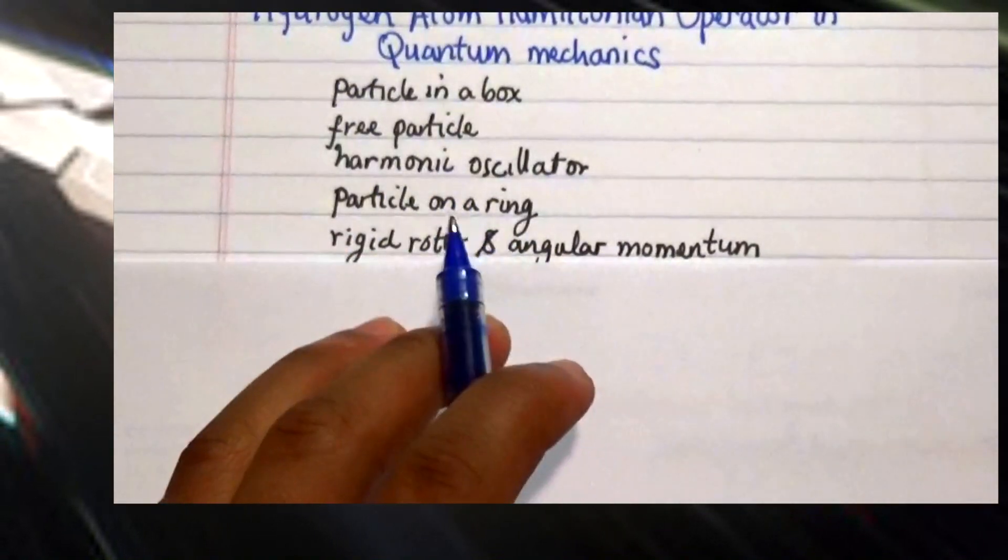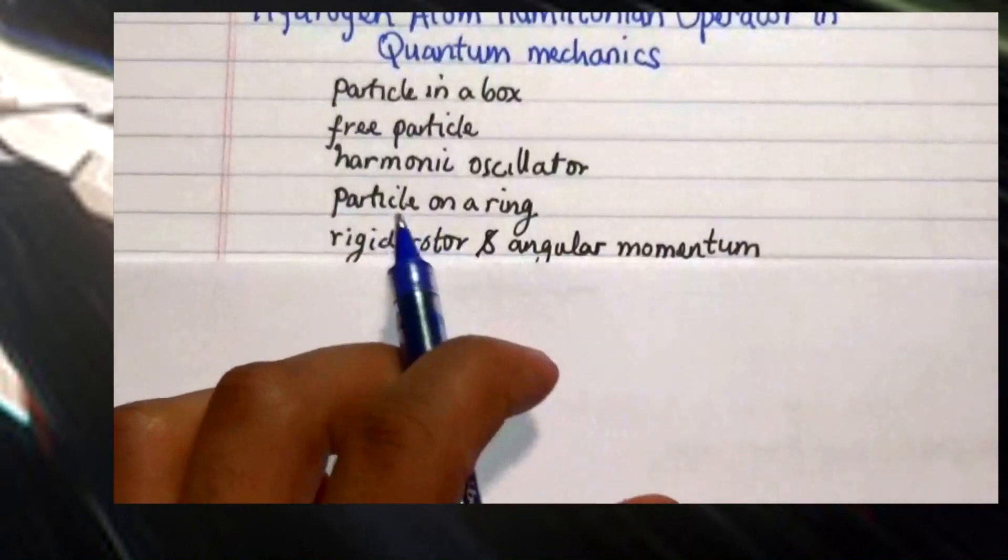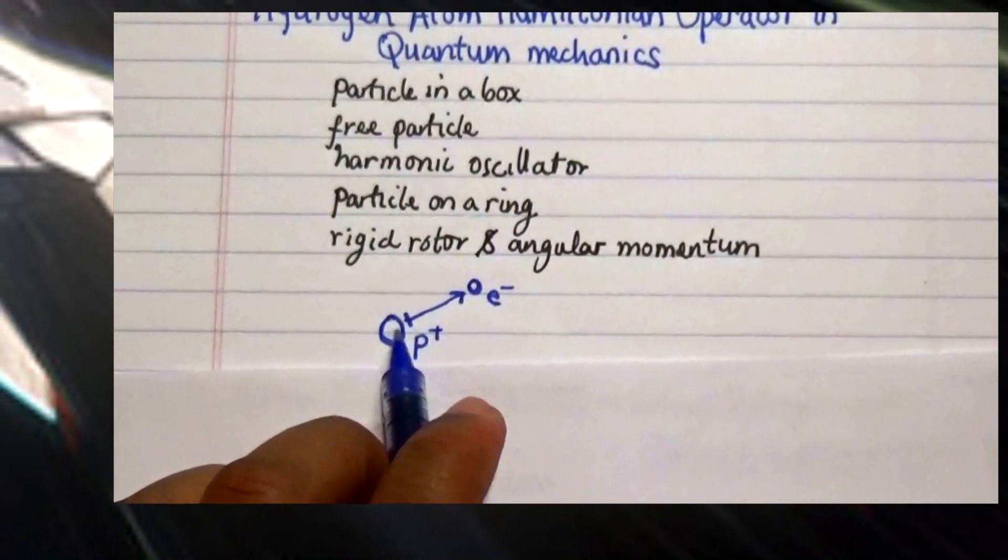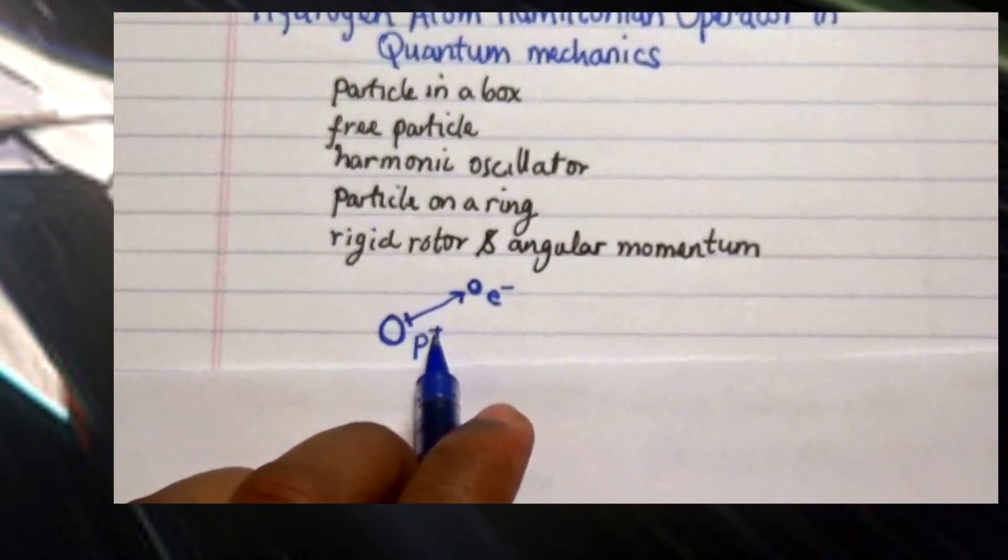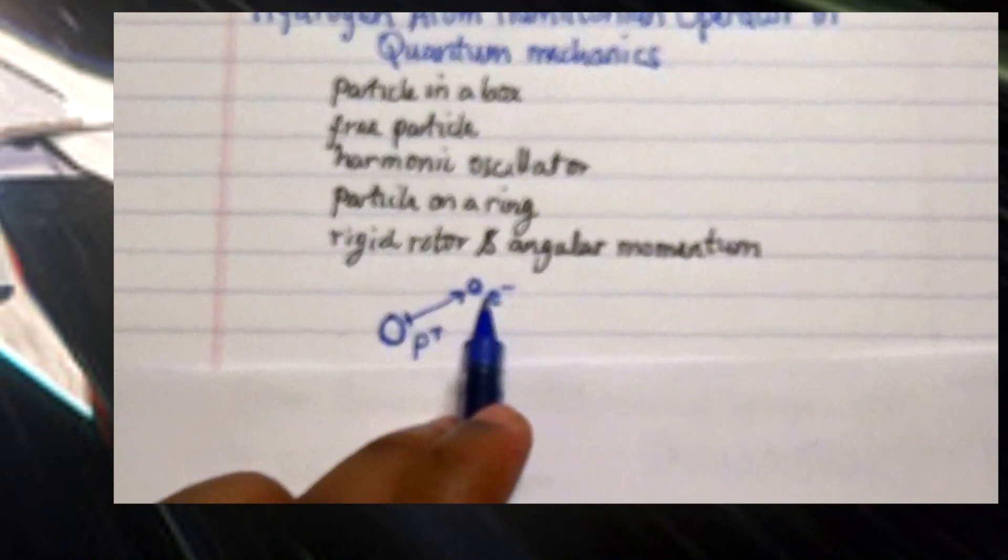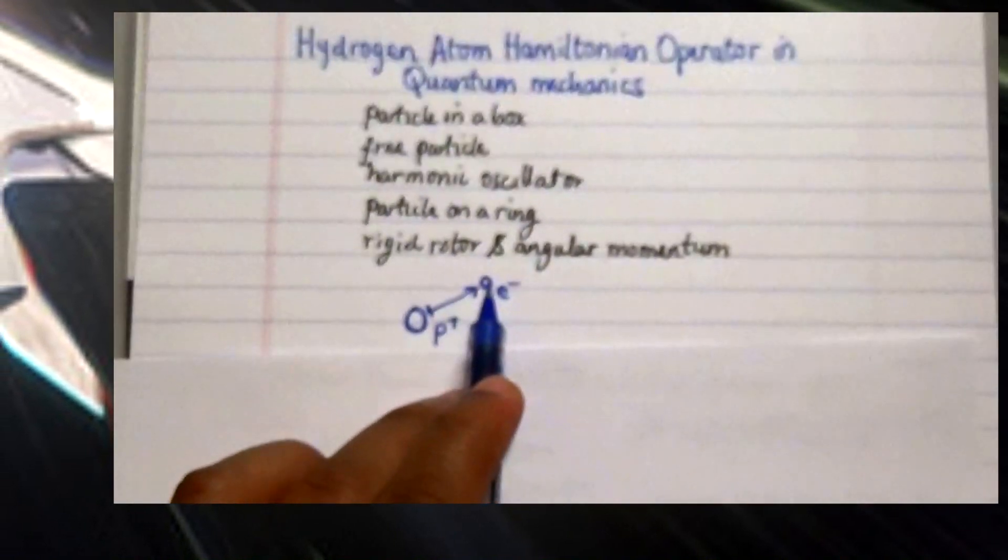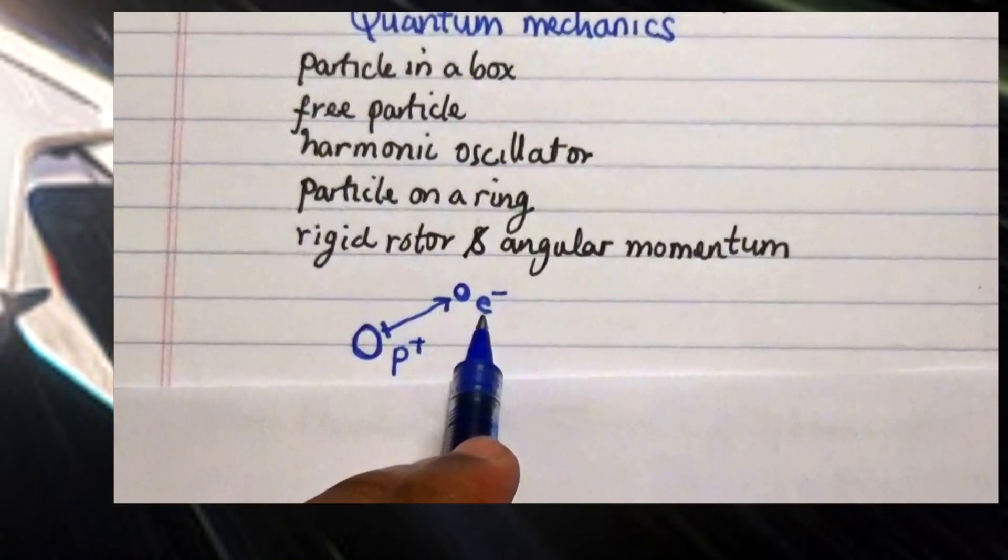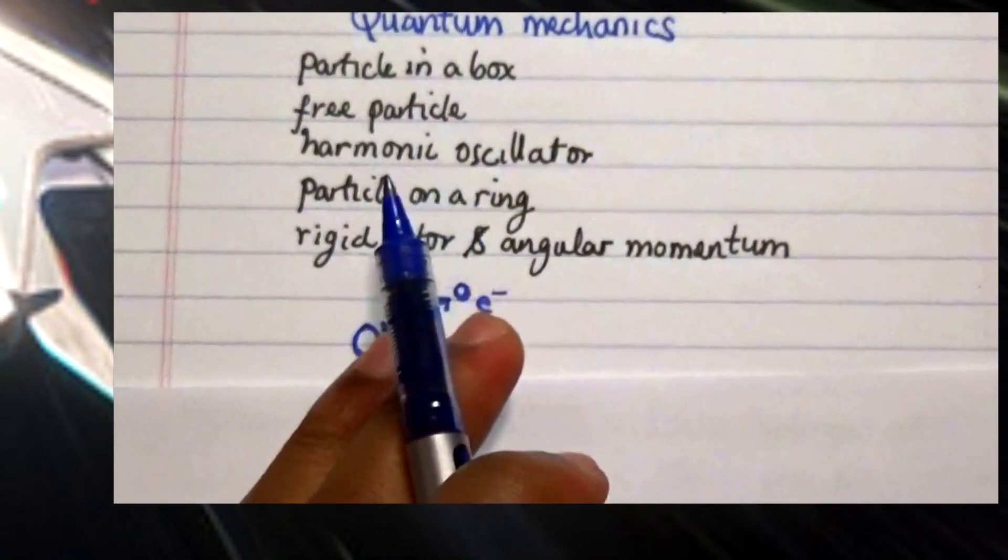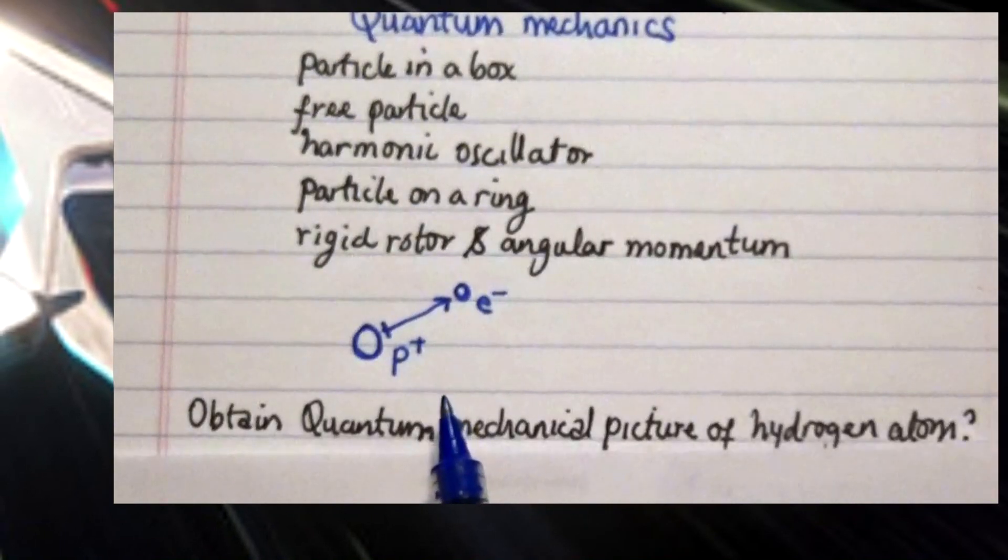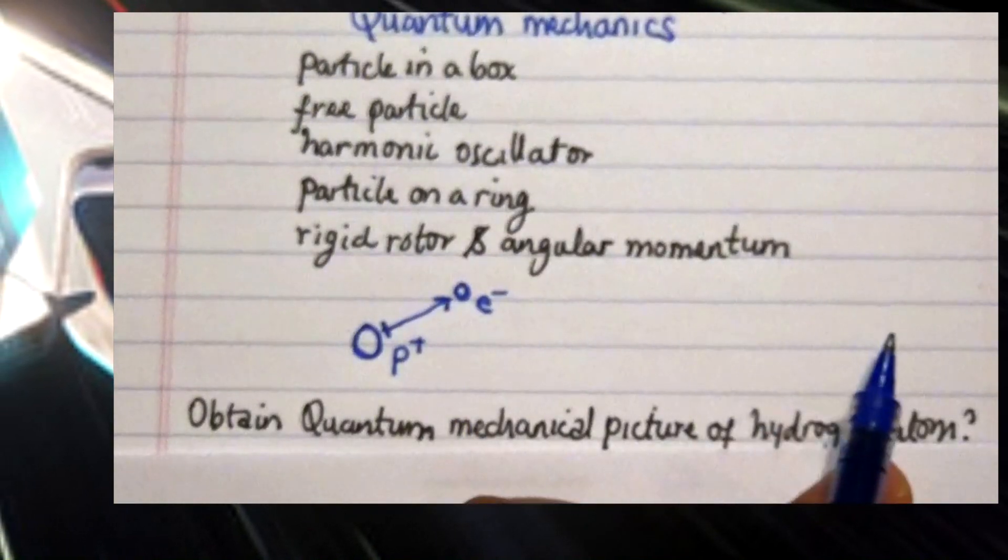Now in this video we'll consider a hydrogen atom that consists of a nucleus with a proton, and distance away from this proton is an electron which is a smaller particle. Our goal or question is how would we obtain the quantum mechanics picture of the hydrogen atom.